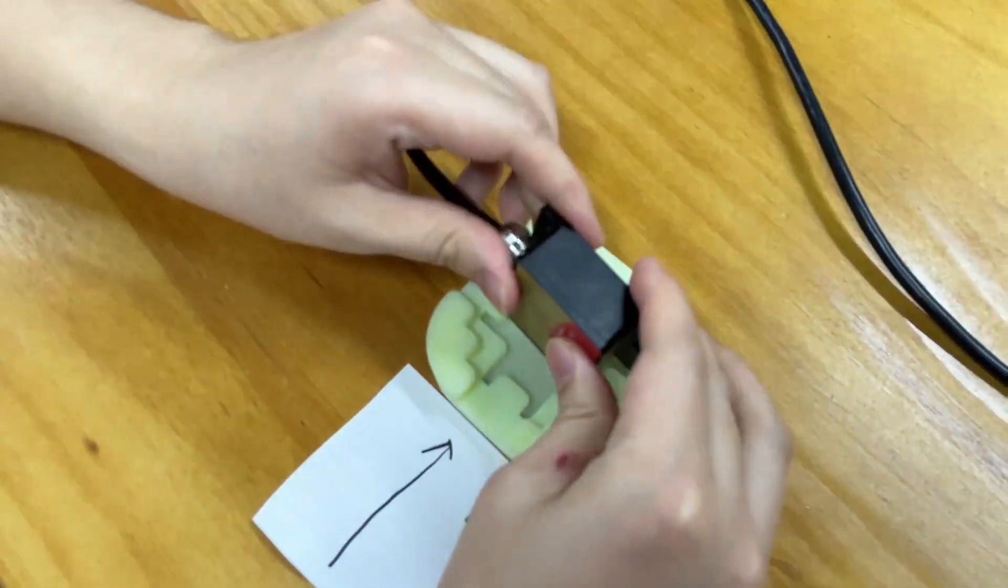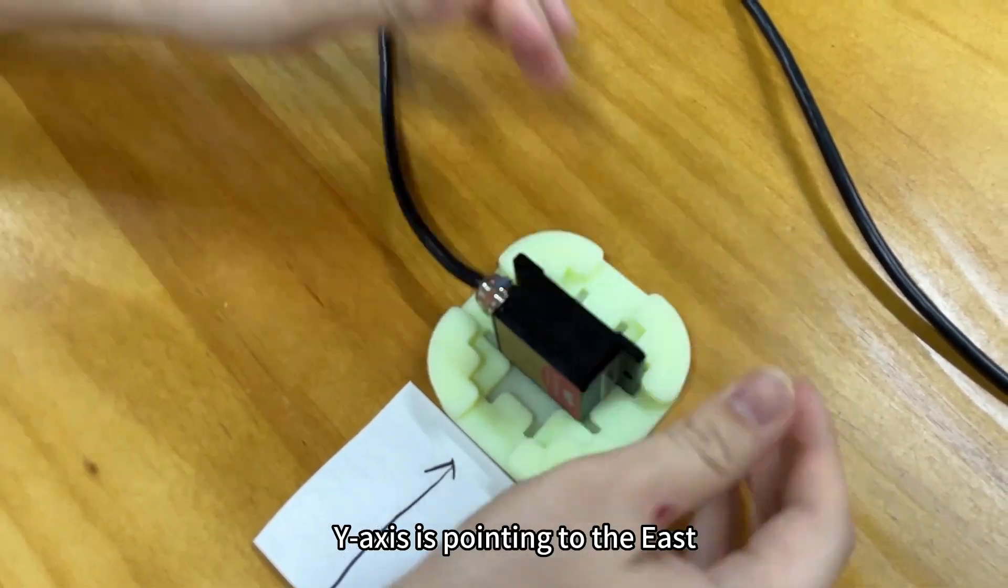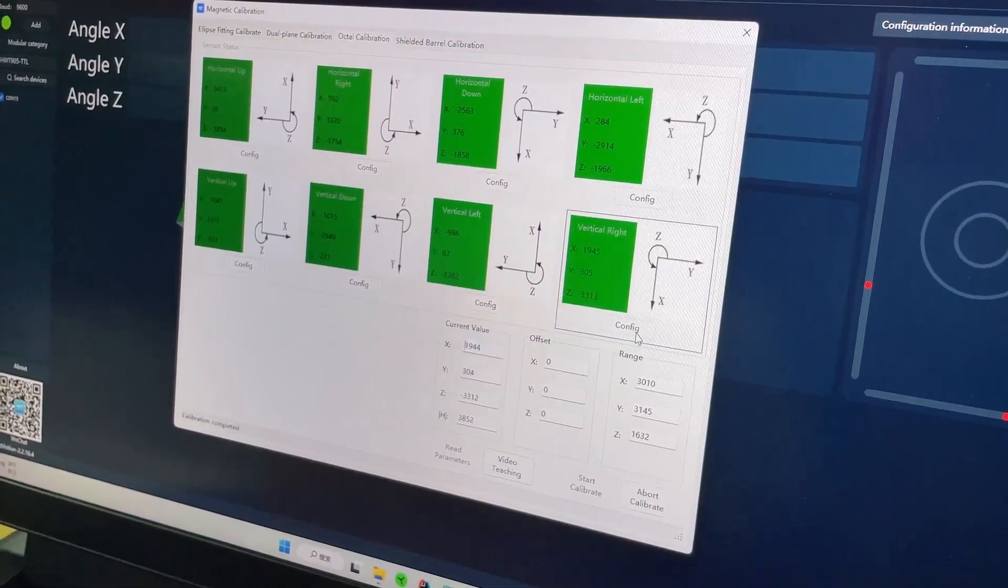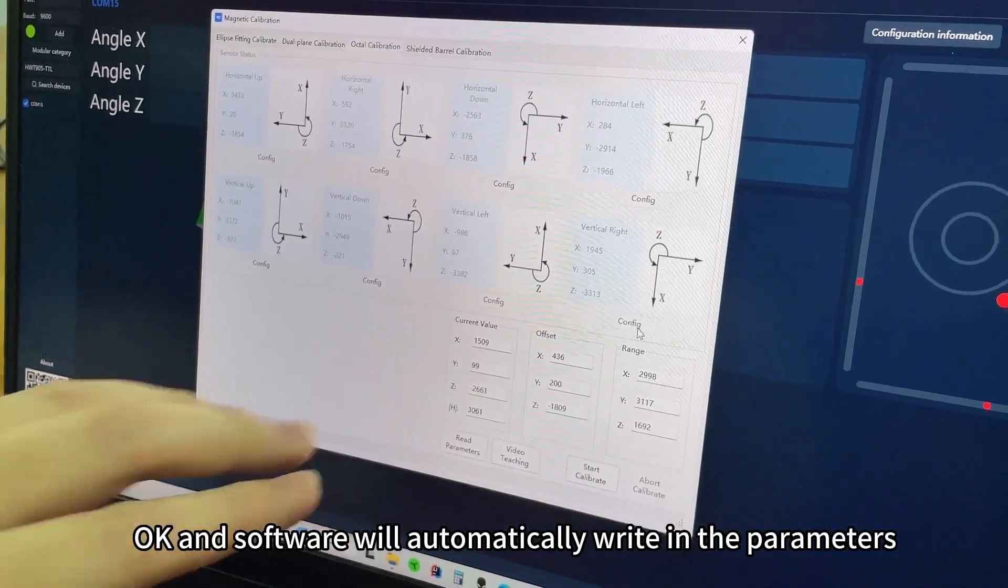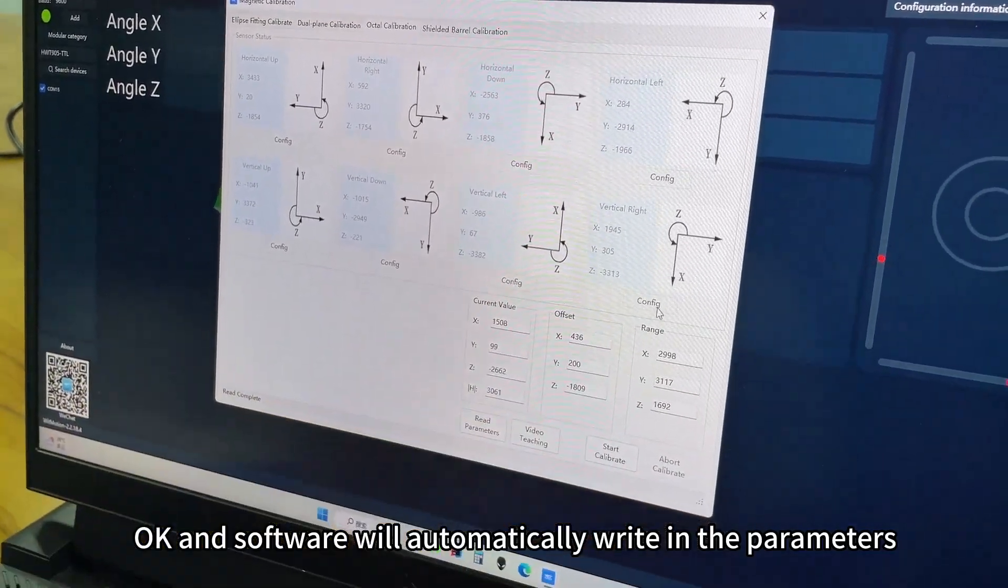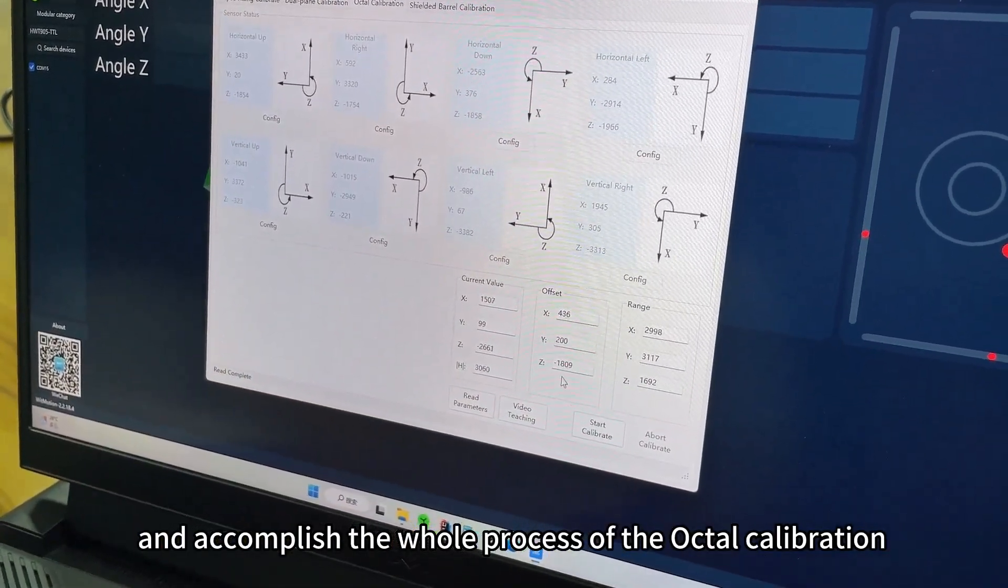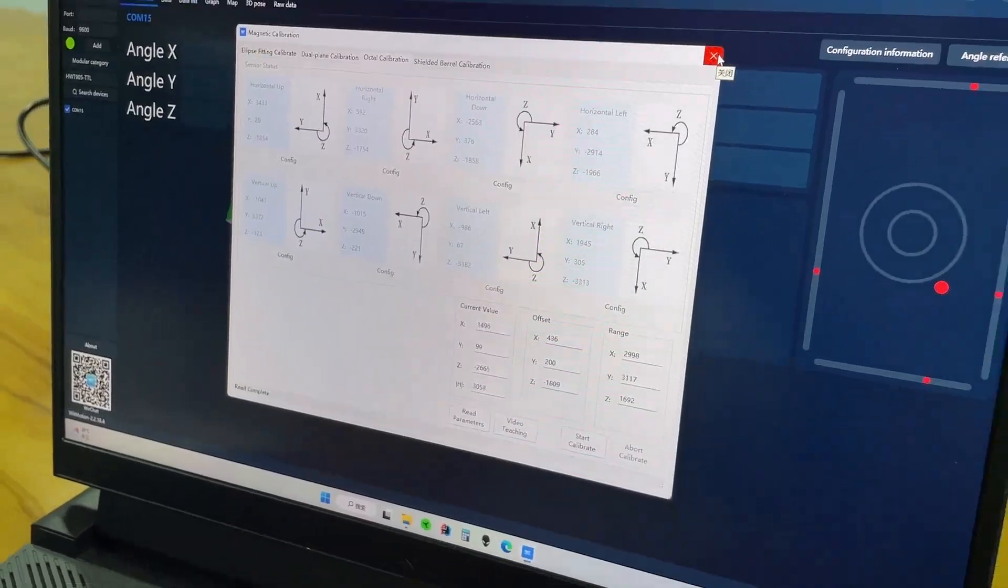Let's change with the Y axis pointing to the east. The software will automatically write in the parameters and accomplish the whole process of the Octo calibration. Thanks a lot for watching.